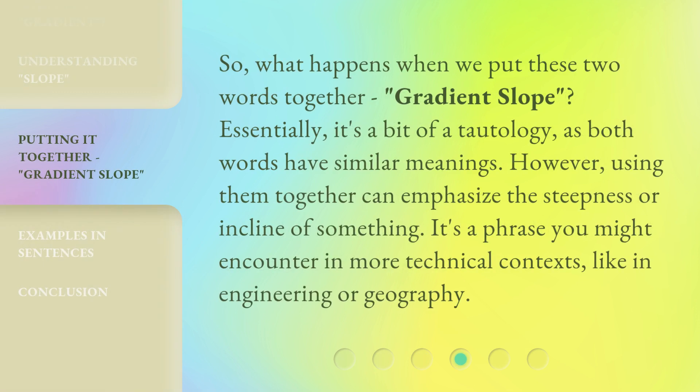So, what happens when we put these two words together — gradient slope? Essentially, it's a bit of a tautology, as both words have similar meanings. However, using them together can emphasize the steepness or incline of something. It's a phrase you might encounter in more technical contexts, like in engineering or geography.